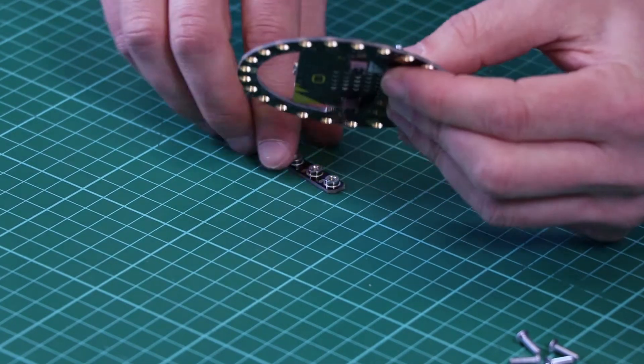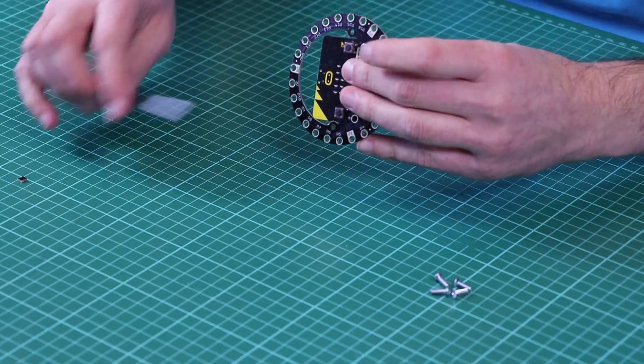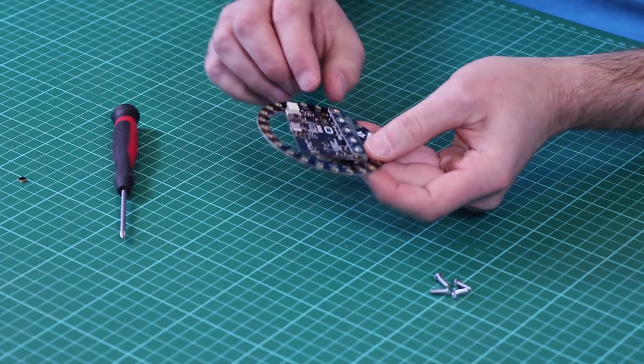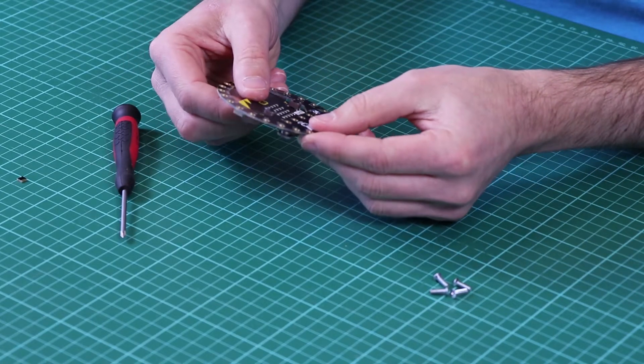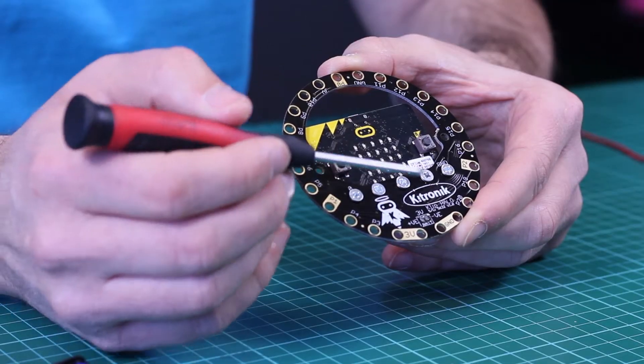Bolts pass through and screw into this mounting bar behind. The process is repeated for all the bolts, holding the micro:bit securely in place like this.